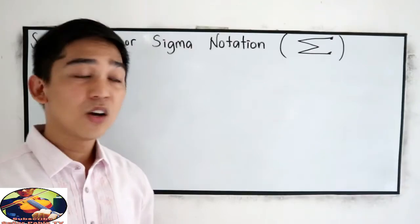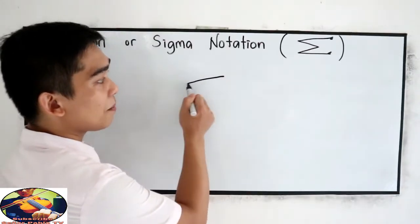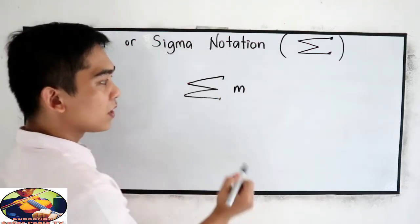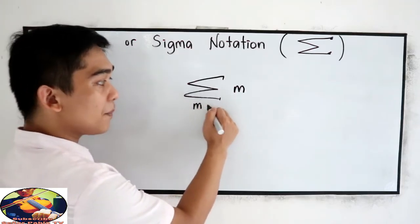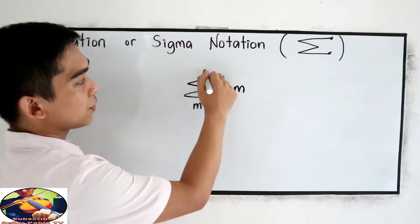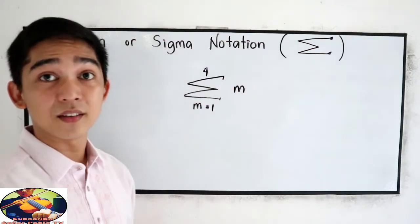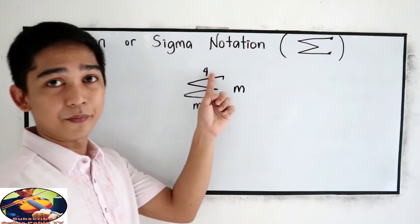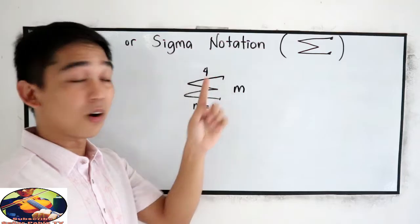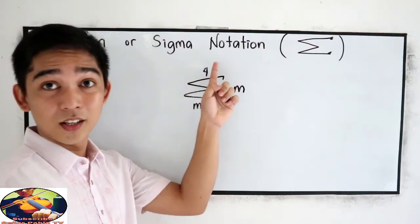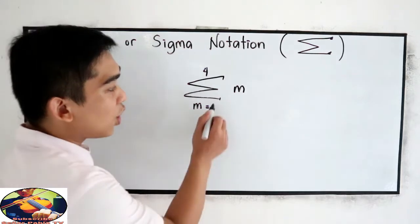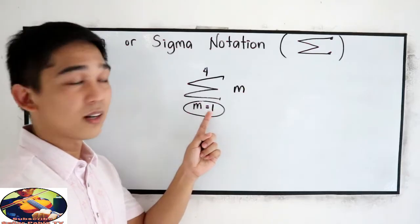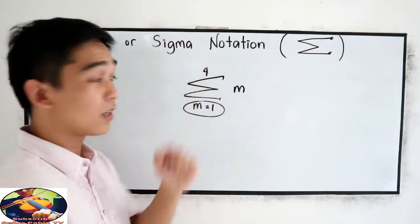Let's say we have the summation of M, where M is equal to 1 to 4. Let us read: summation of M goes from 1 to 4. So we are going to get the sum of 1 to 4. Take note that on this part will be our starting number and this will be our ending number.